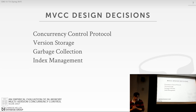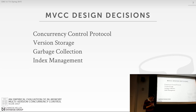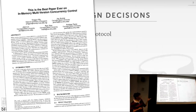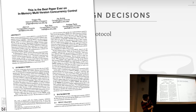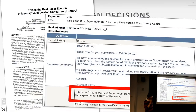The paper you read actually came out of this course — something I wrote with some students here. I'm still kind of a new professor, but this is actually one of my most favorite papers. I love it so much that when we submitted it to VLDB, we put the title as 'This Is the Best Paper Ever on In-Memory Multi-Version Concurrency Control.' The paper got great reviews, but the very first comment was 'remove this is the best paper ever from the title and try to be more scientific.'